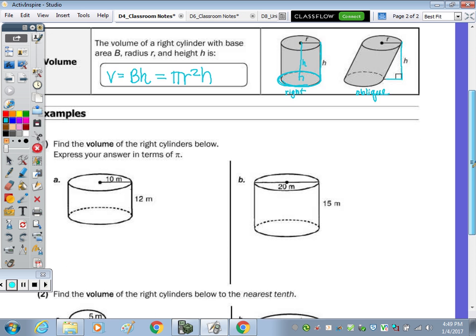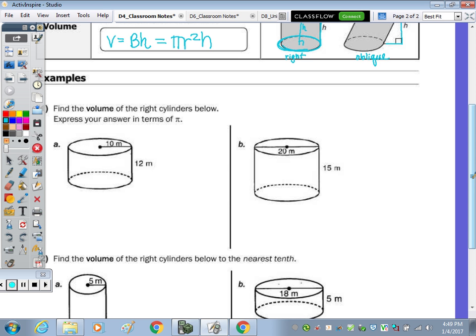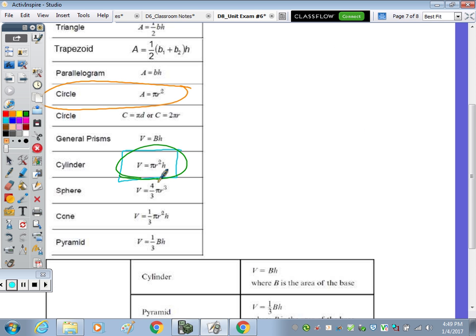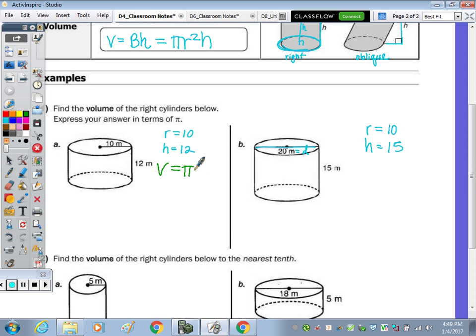So looking at the first one, find the volume of the right cylinders below. In part A, we have a radius of 10 and a height of 12. Let's note the radius and height for both. In part B, we're going to have a radius of 10 as this is the distance all the way across, which is your diameter, and a height of 15. Express the answer in terms of π so that's a little bit less work. So using the formula from the reference sheet, volume equals πr²h. So it's going to be π times 10² times 12. So just calculating, 10² is 100. And then 100 times 12 is going to be 1200π. Leaving it in terms of π. And then we do have a unit this time. Volumes in terms of cubic units. So that would be cubic meters.